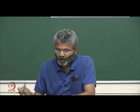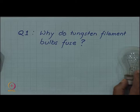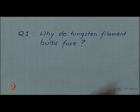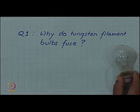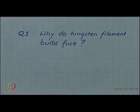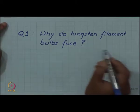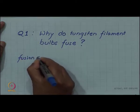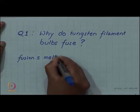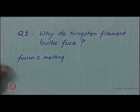The first question is why do tungsten filament bulbs fuse? These are the old fashioned bulbs now going rapidly in obsolescence. You can see that there is a tungsten filament and that filament finally comes to an end of its life and that is called that the bulb has fused. So why do bulbs fuse? Now, fusion as such means melting, but does the bulb filament really melt?